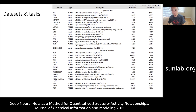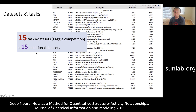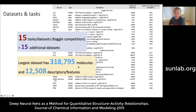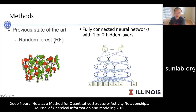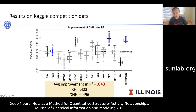Looking at the results: the paper includes the 15 tasks from the Kaggle competition, and they expanded this with 15 additional datasets, giving 30 tasks total. The largest task has over 318,000 molecules, and the largest has over 12,000 features. Methods compared include random forest — the previous state-of-the-art commonly used for QSAR — and the deep neural network model used by the winning team.